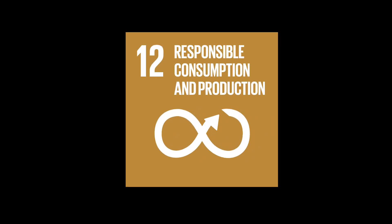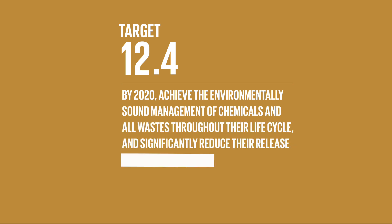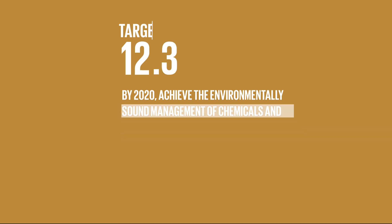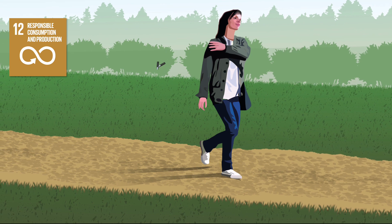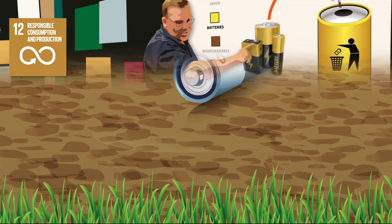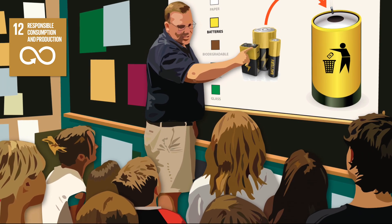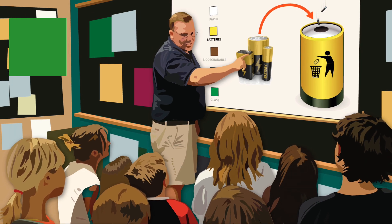SDG12 moves to ensure sustainable consumption and production patterns. Through Target 12.4, it aims to achieve sustainable chemical management and waste disposal. The irresponsible release of pollutants in the environment by anyone can lead to soil contamination, so efforts should be made to educate society and raise public awareness of the impacts of their actions on soil health.